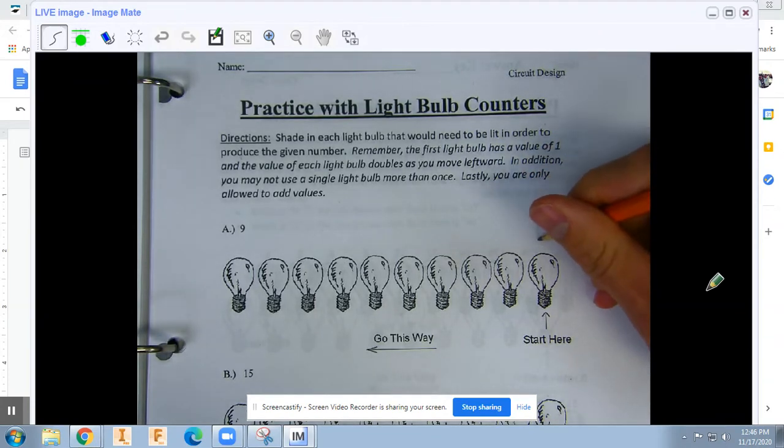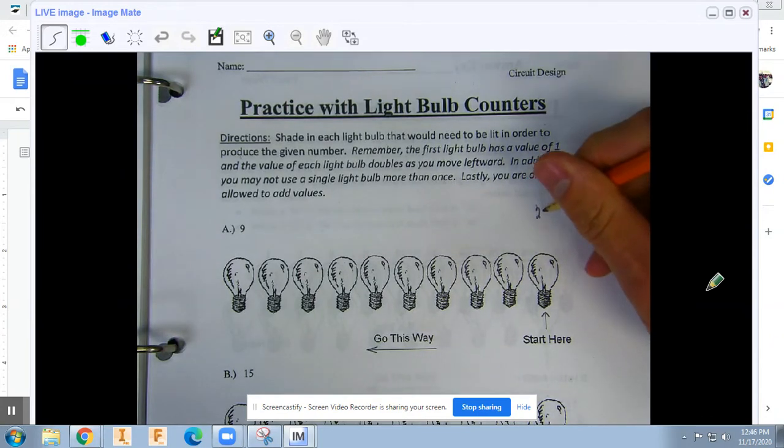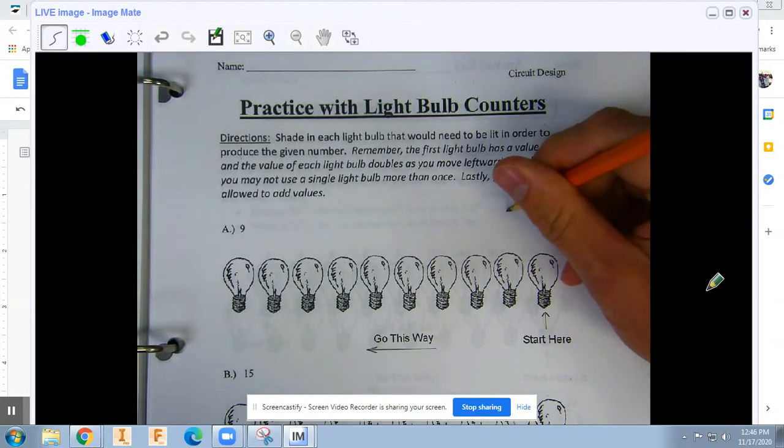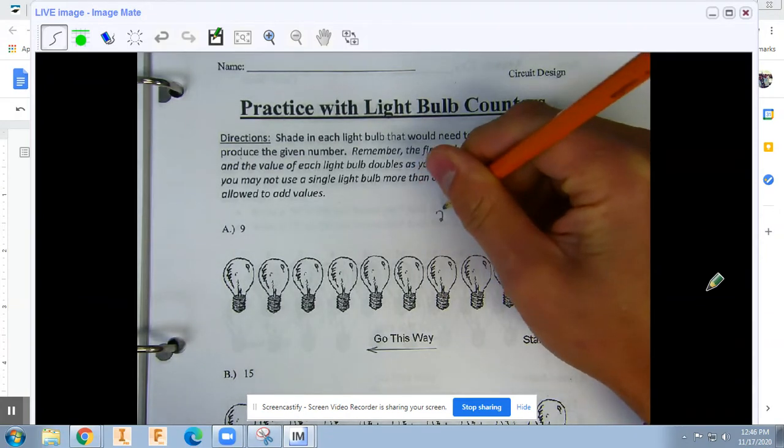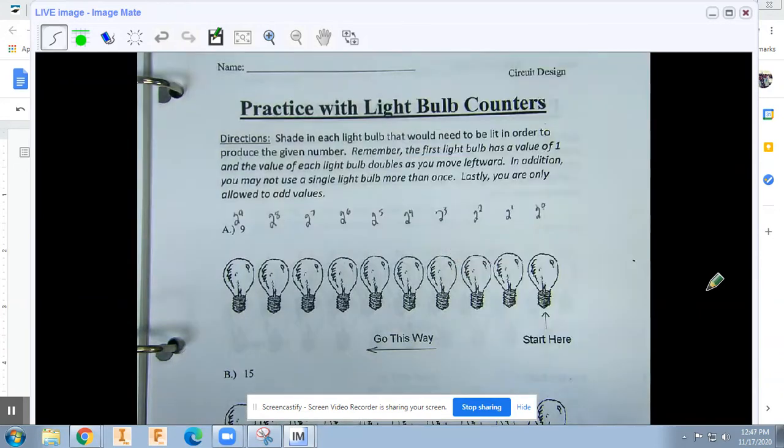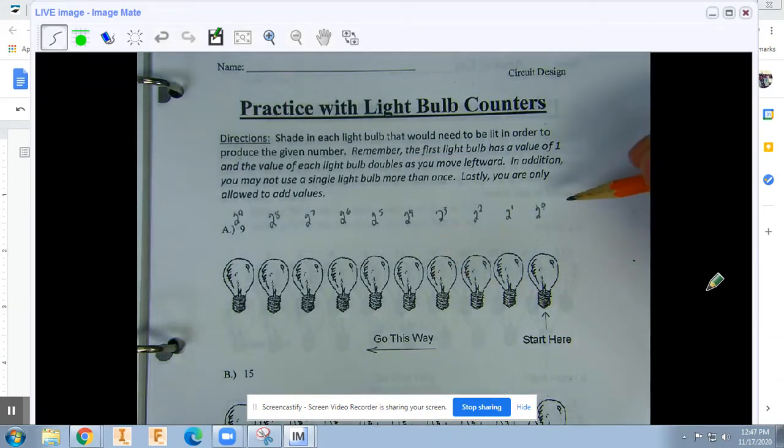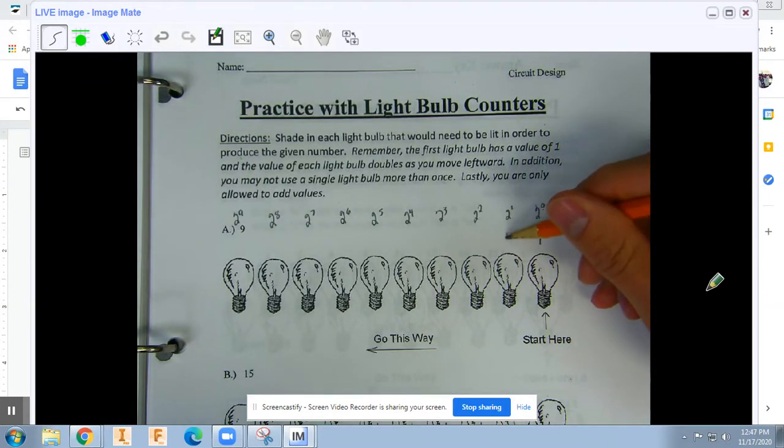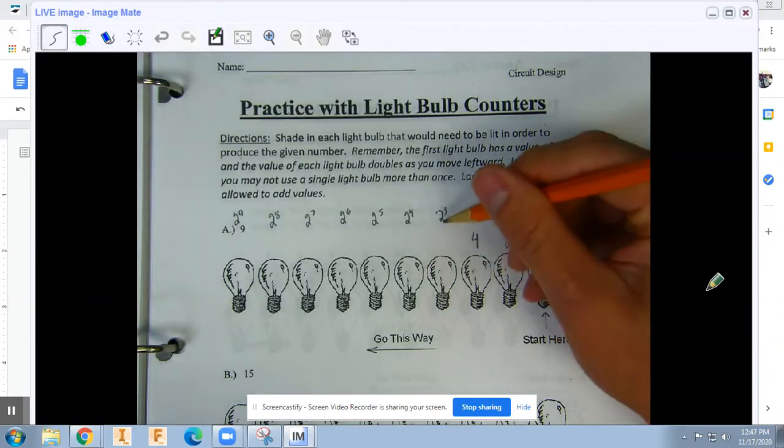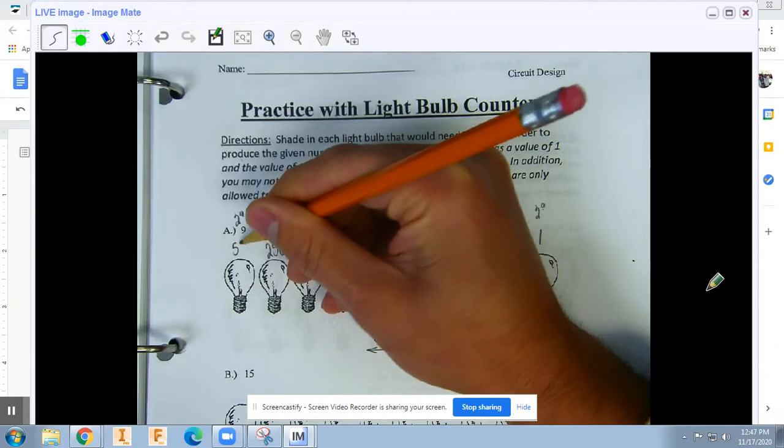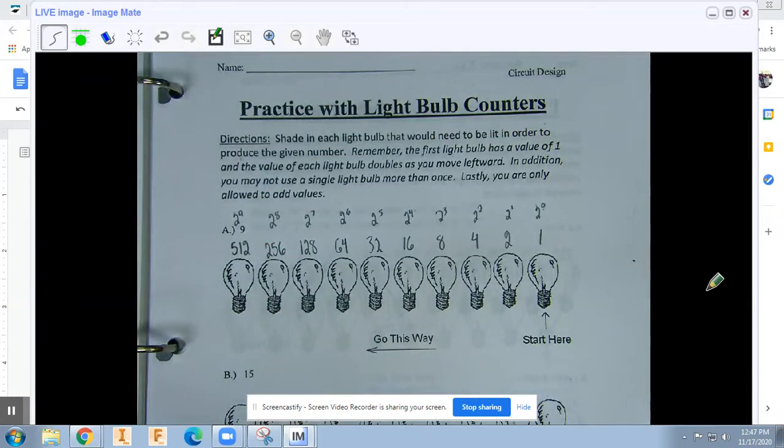So on this page you should write 2 to the 0, 2 to the 1st, 2 to the 2nd, 2 to the 3rd. As you may recall from algebra, 2 to the 0 power is 1, 2 to the 1st power is 2, 2 to the 2nd power is 4, 2 to the 3rd is 8, 16, times 2, 32.